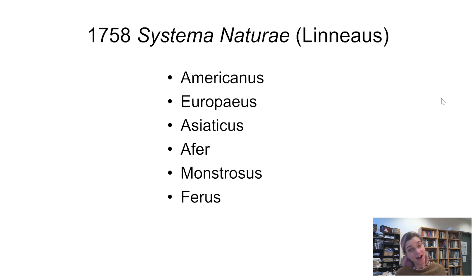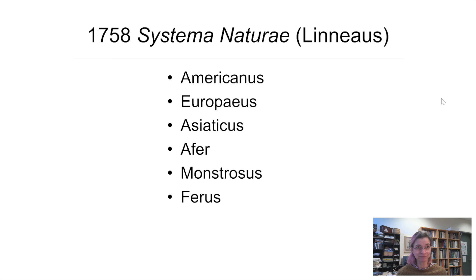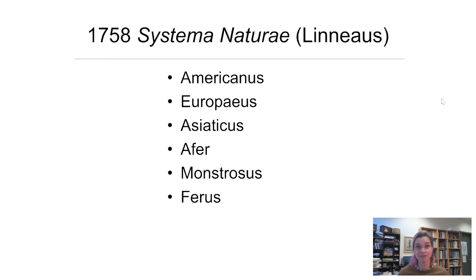We have changed a lot of our scientific views since then — we replaced the miasma theory of disease with the germ theory, significantly updated our thinking on gravity since Newton thanks to Einstein, and replaced a static view of biology with evolution. It is time to update Linnaeus's categories. These racial groups don't exist in humans. Science has rejected the hypotheses of Asiaticus, Ferus, Europaeus, and Monstrosus time and time again. This is why scientists keep saying that race isn't real — and neither are wolf children or Bigfoot, although I'm guessing some of you might want to debate me on that last one.